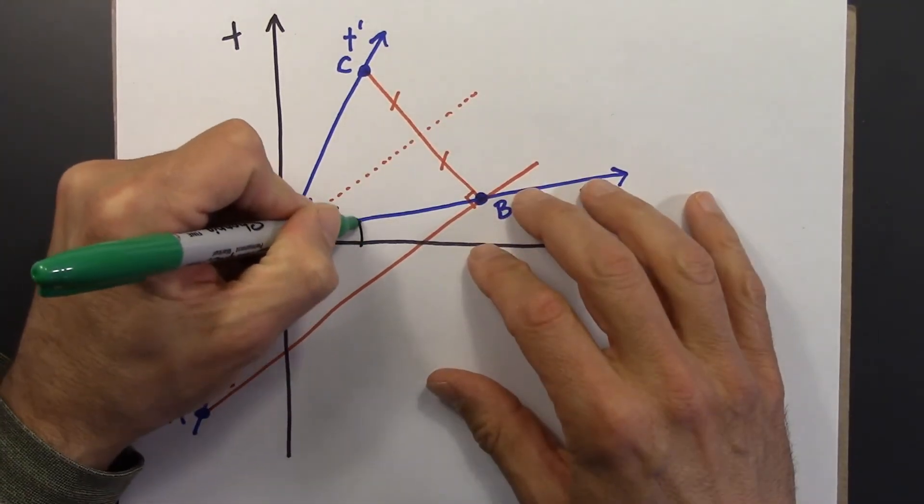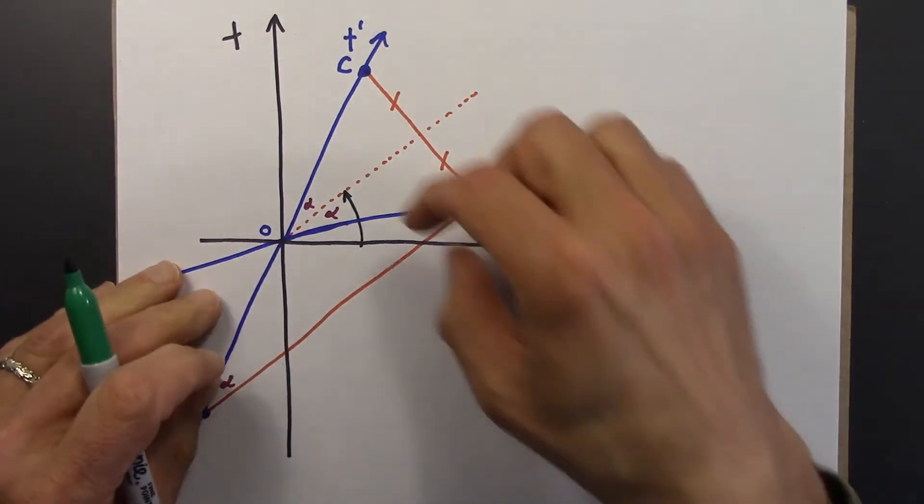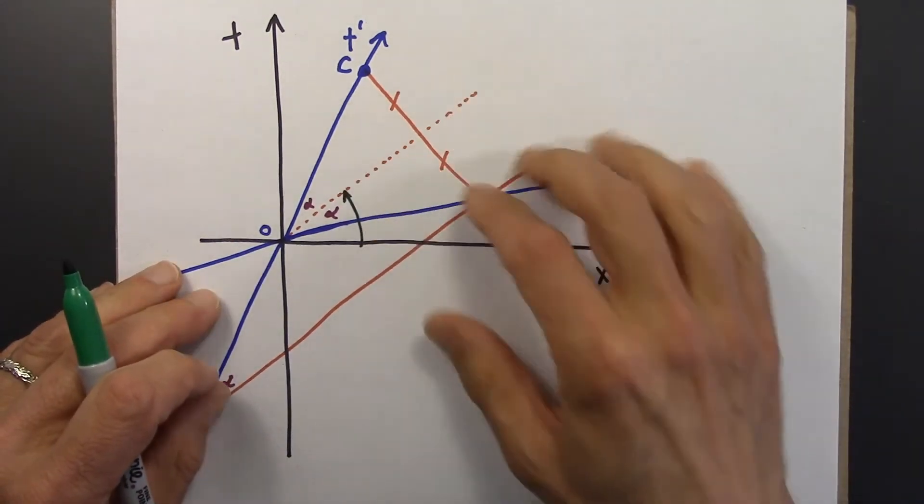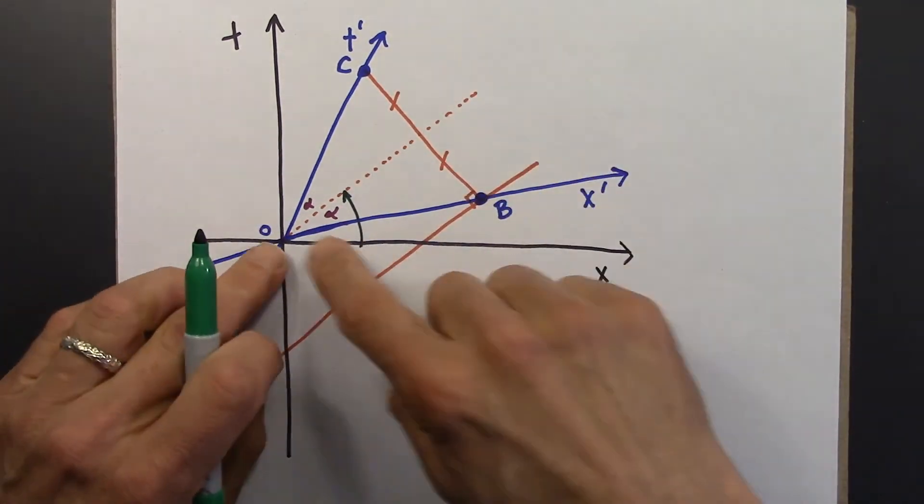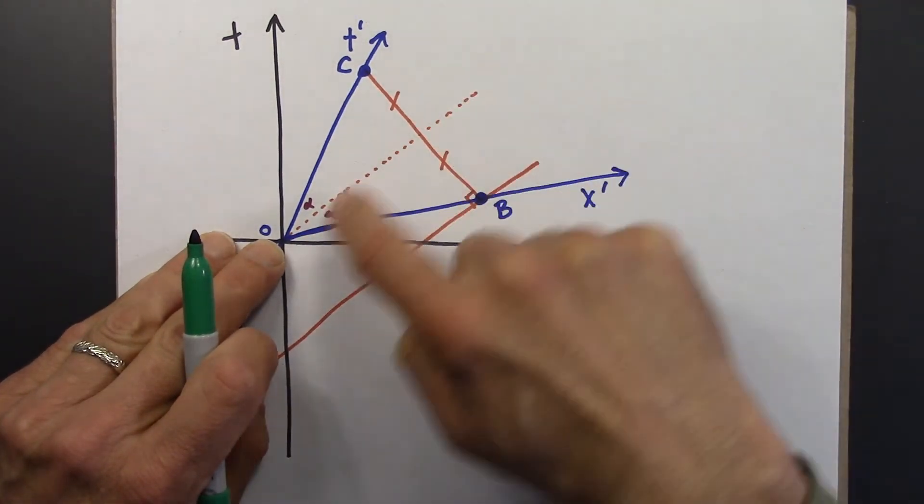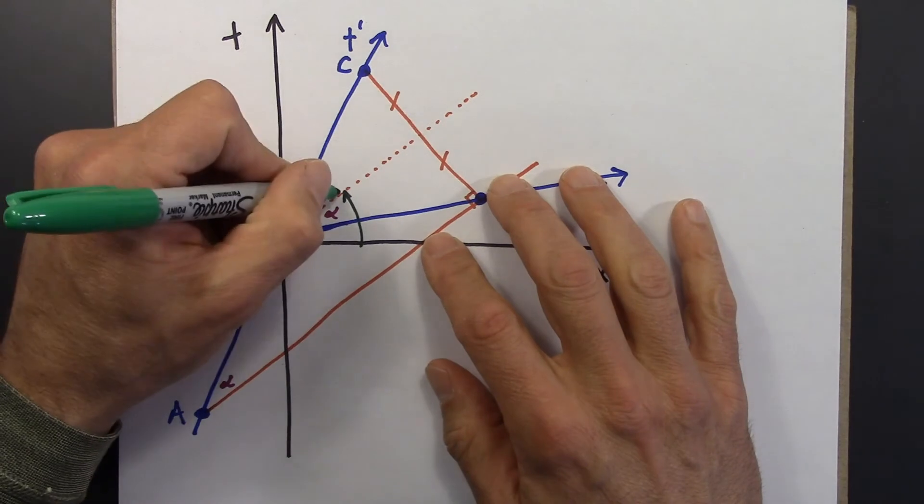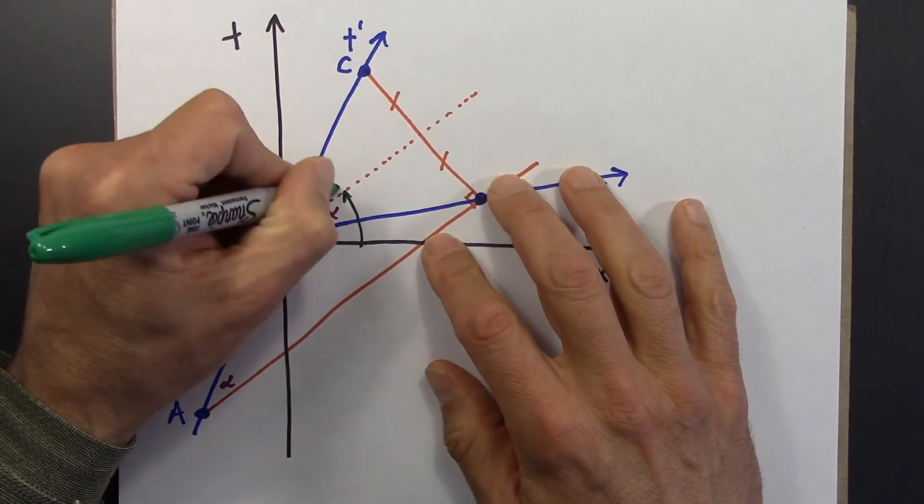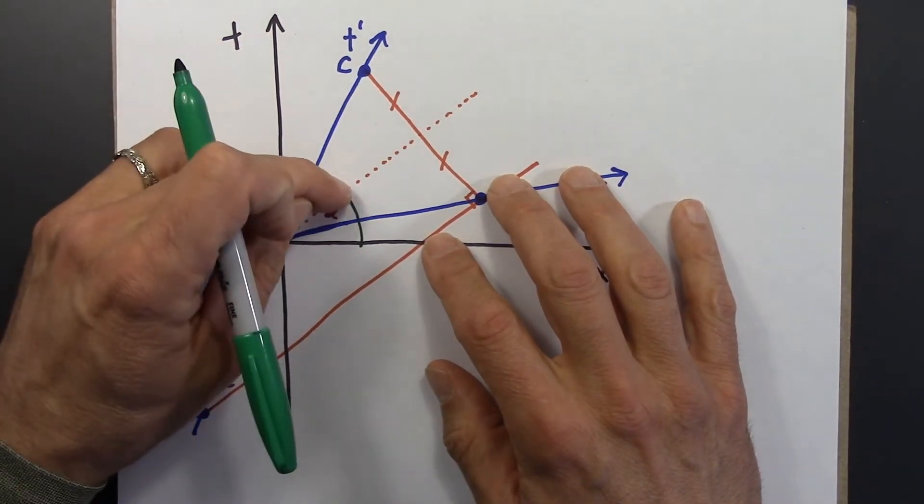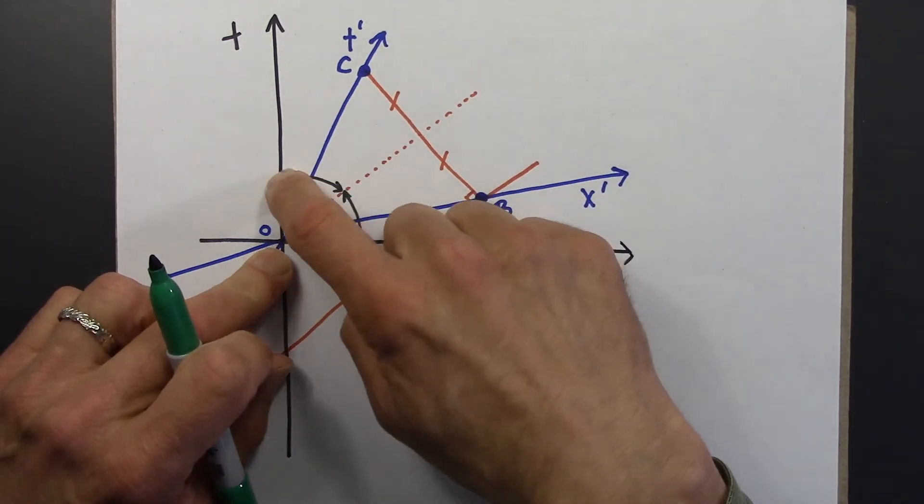Let's see. This angle here is 45 degrees. Because this is light traveling at the speed of light, making a 45 degree angle. This angle here is also 45 degrees. 45, 45 is 90.